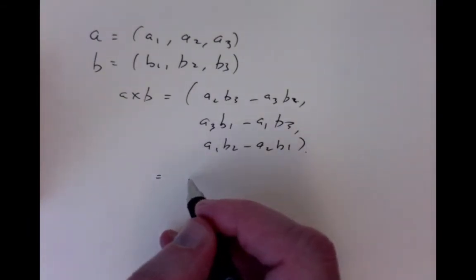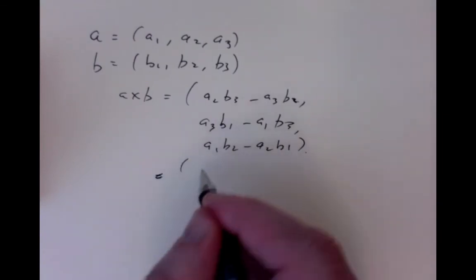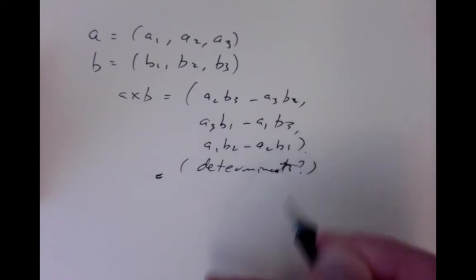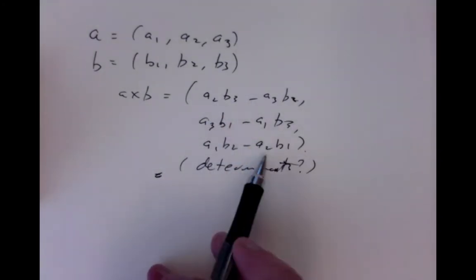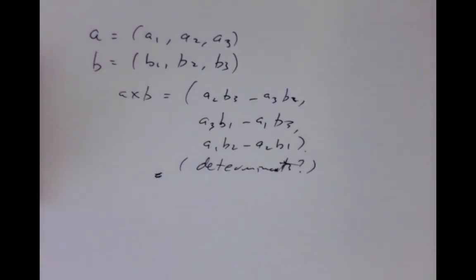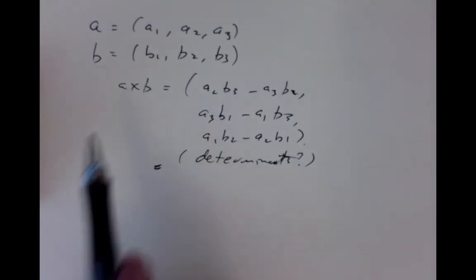You could remember it in terms of determinants, but we haven't done determinants yet, so we'll worry about that later. The point is it's a vector — a very complicated expression to compute from one vector and another to get a third. It's deeply related to the notion of rotation in three dimensions, which is why we didn't see it when working with vectors in the plane.